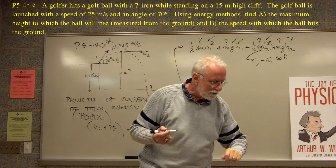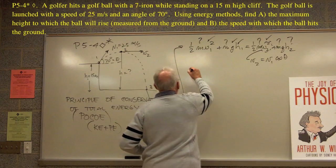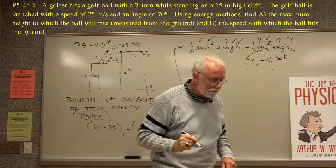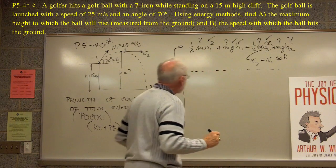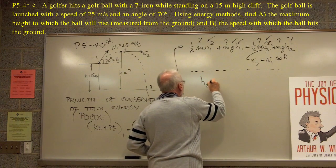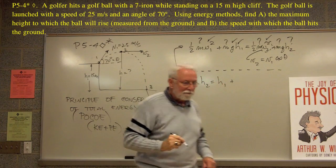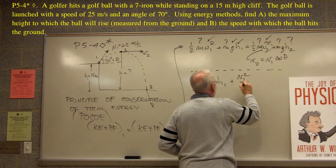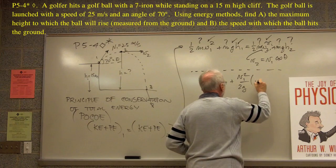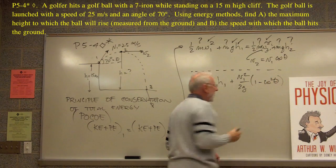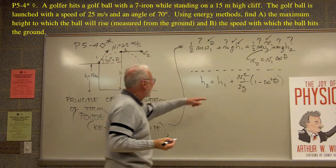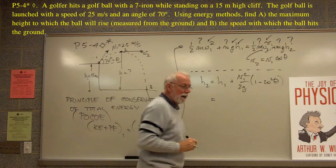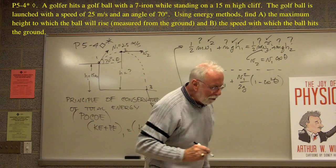So now what we have to do is do a little mathematical interlude in which we then solve this and eventually find out that h2 is equal to h1 plus v1 squared over 2g times 1 minus cosine squared theta. We know all that stuff. h1 is known, v1 squared is known, g is known, theta is known. So this just turns out to be a number. And so here's the number: it is 43.1 meters.